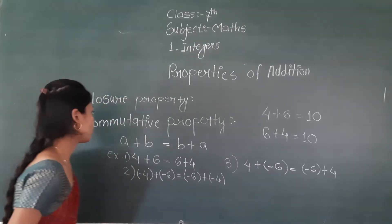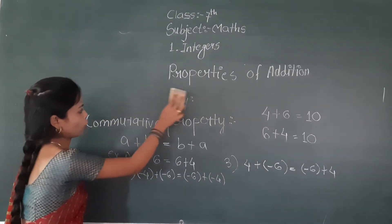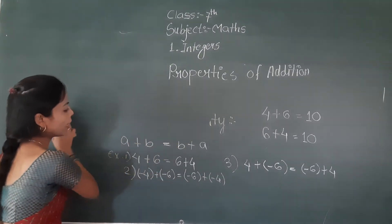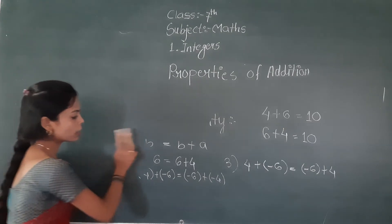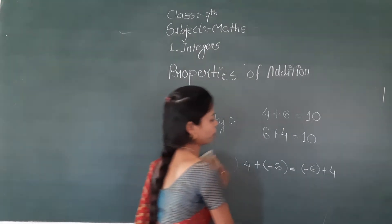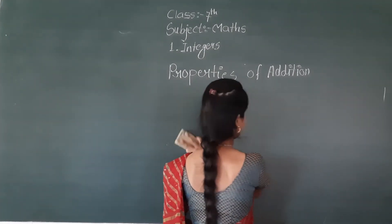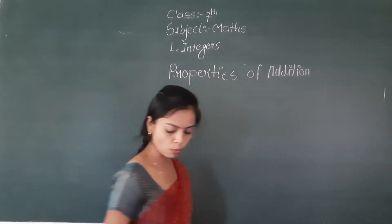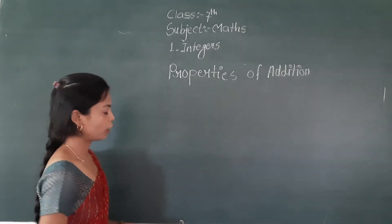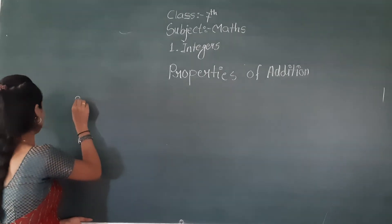That is commutative property. What is commutative property? The order of the integers does not matter when you add them — the resultant is always the same. This is your second property. First one is closure property and second one is commutative property. Now we go to the third property — associative property.